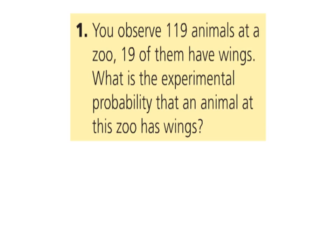Here's a different type of experimental probability. If you're at the zoo and you observe 119 animals, 19 of those have wings, what would be the experimental probability that an animal at this zoo has wings? We take the 19 winged animals that we saw, divided by the 119 total. Be careful about reducing this one. It doesn't really reduce as a fraction. The percentage I would round to be about 16.0%, since the decimal is 15.966%.